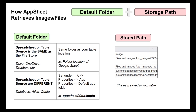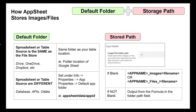Now that we've covered the default folder, we can move on to the stored path itself, which is a lot simpler. It's going to be whatever value is stored in the table itself — you can see a screen grab of an image column with the path on there. The full path is the result of combining the default folder plus the storage path appended to it, and that is what AppSheet will use to retrieve that image.